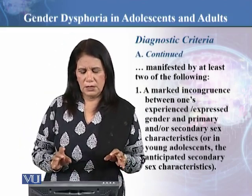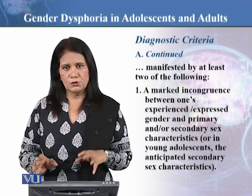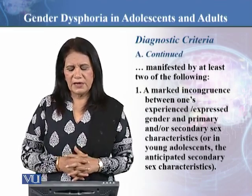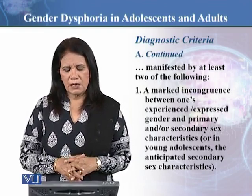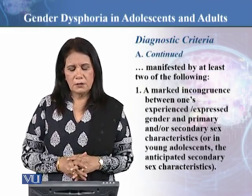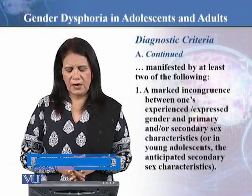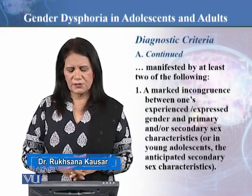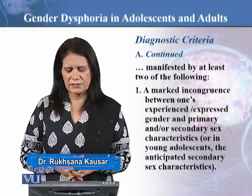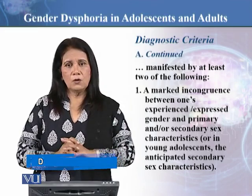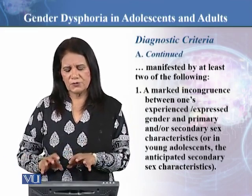Criterion A is common for both and specifies that the condition is manifested by at least two of the following features. Feature one is a marked incongruence between one's experienced or expressed gender and primary or secondary sex characteristics, or in young adolescents, the anticipated secondary sex characteristics.